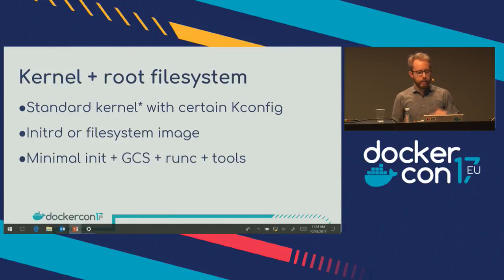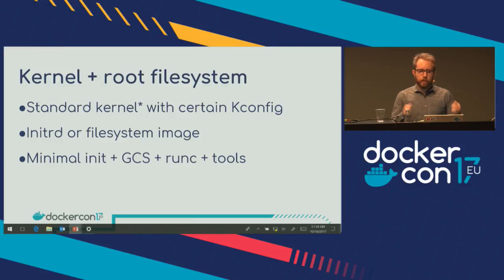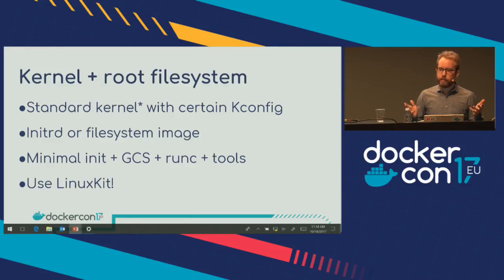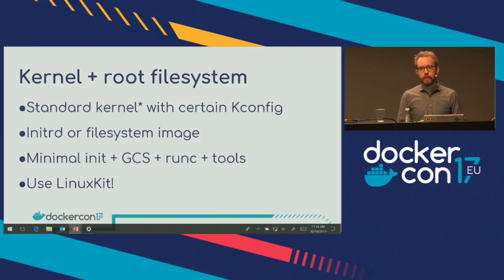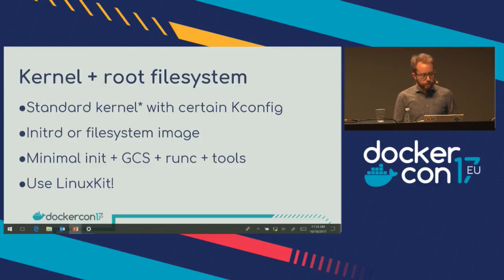For the file system itself, we support either initrd — which is convenient to build but has to be decompressed and loaded into memory during boot — or a file system image that we can use directly. That file system image just contains a minimal init process, GCS, RunC tools, and some basic tools. If you watched Rolf's talk yesterday on LinuxKit, you know this is basically what LinuxKit was made for — constructing these images. So that's definitely the best way to construct these. Use LinuxKit.